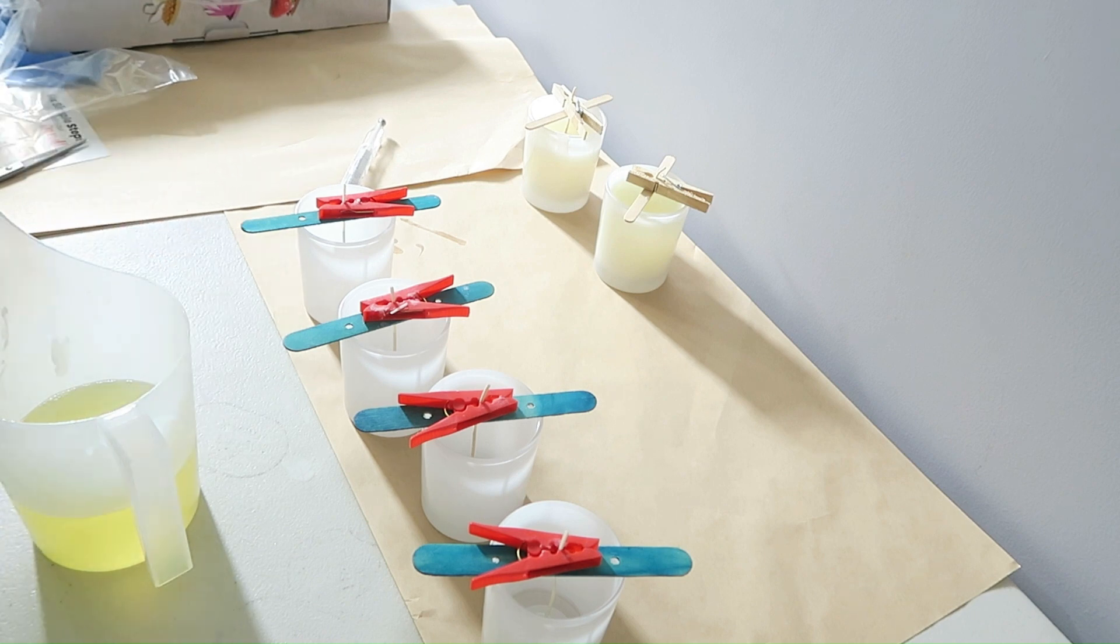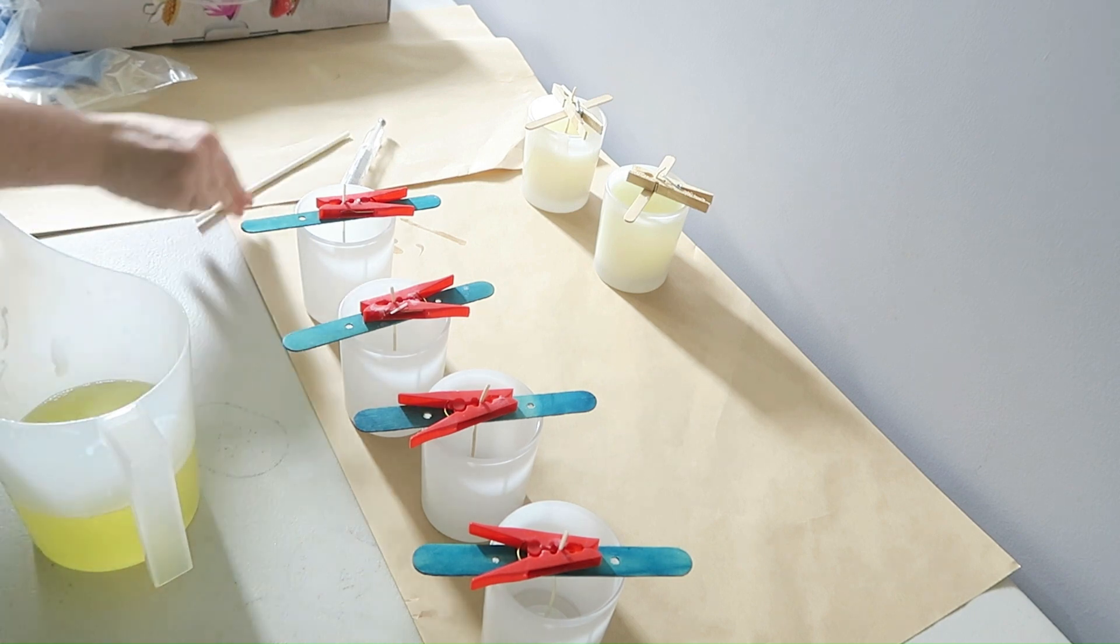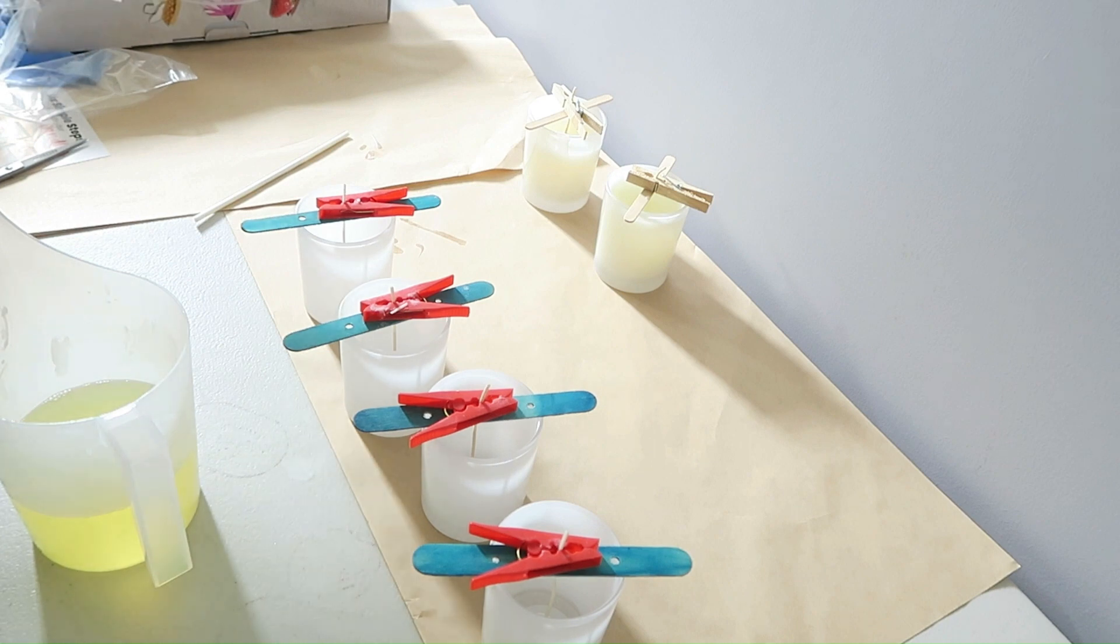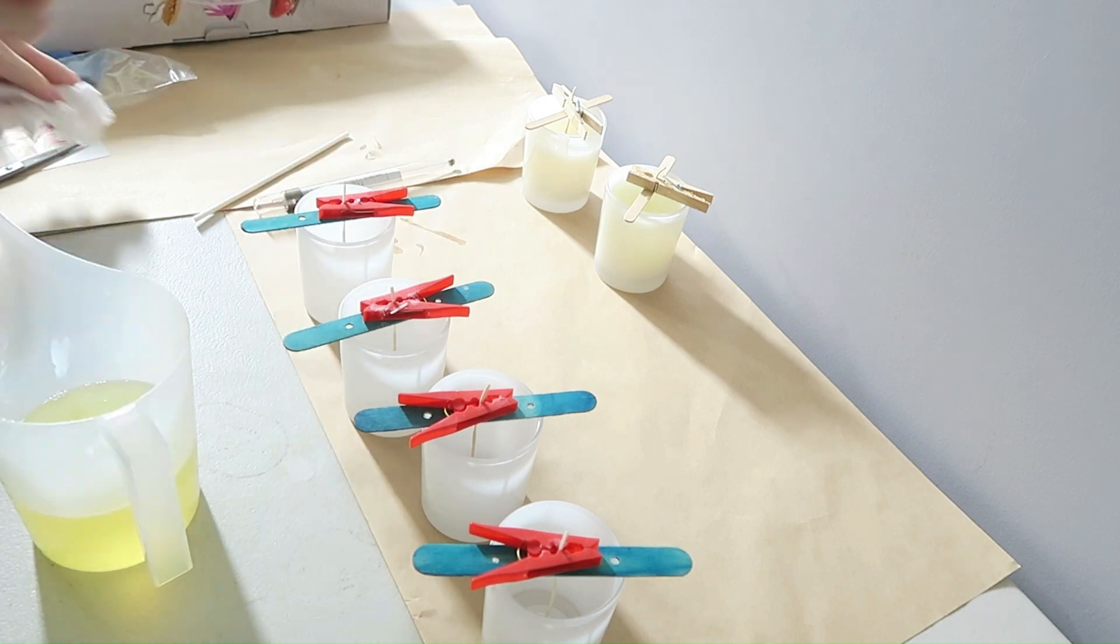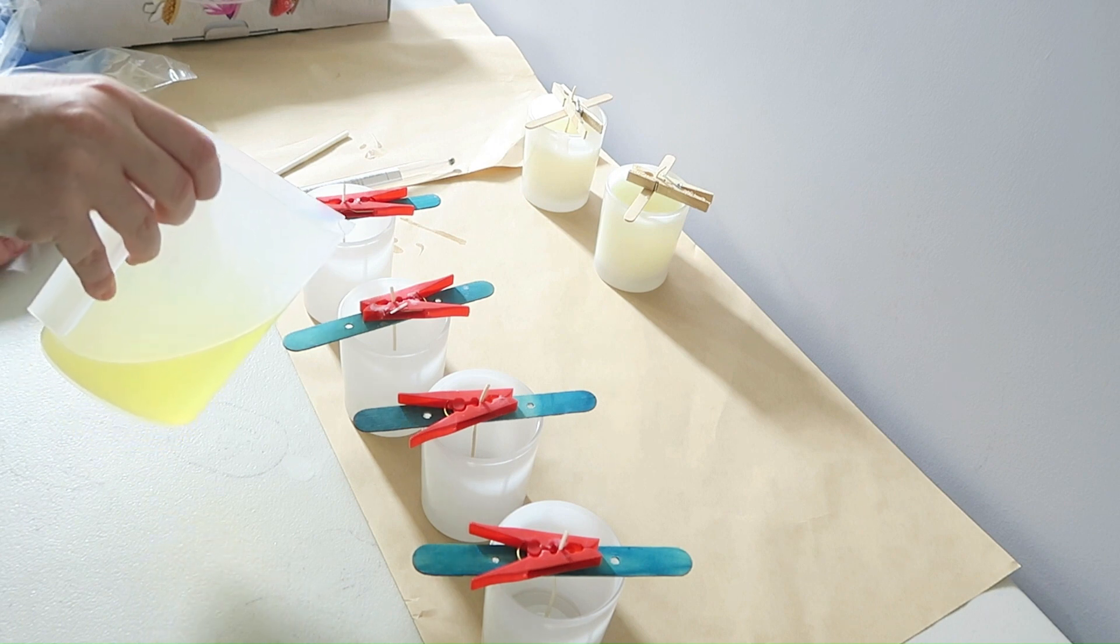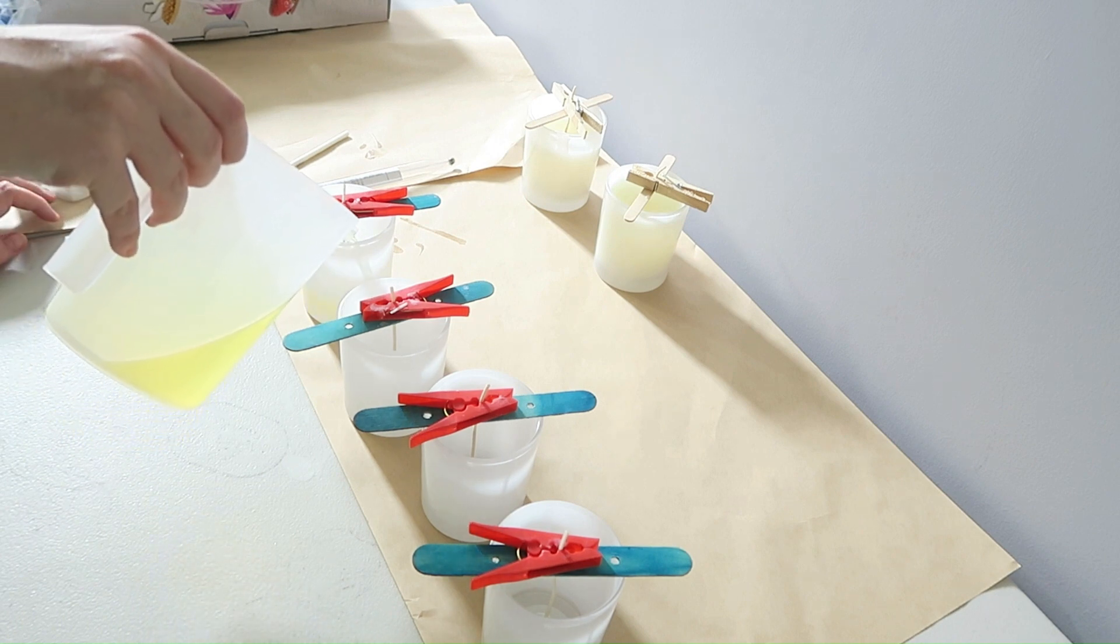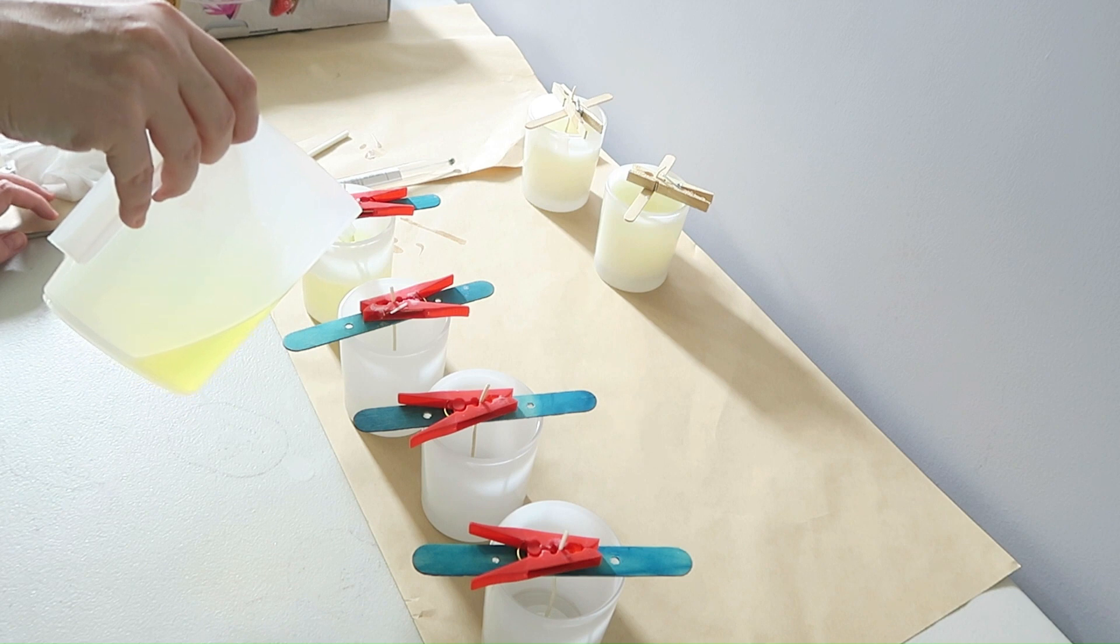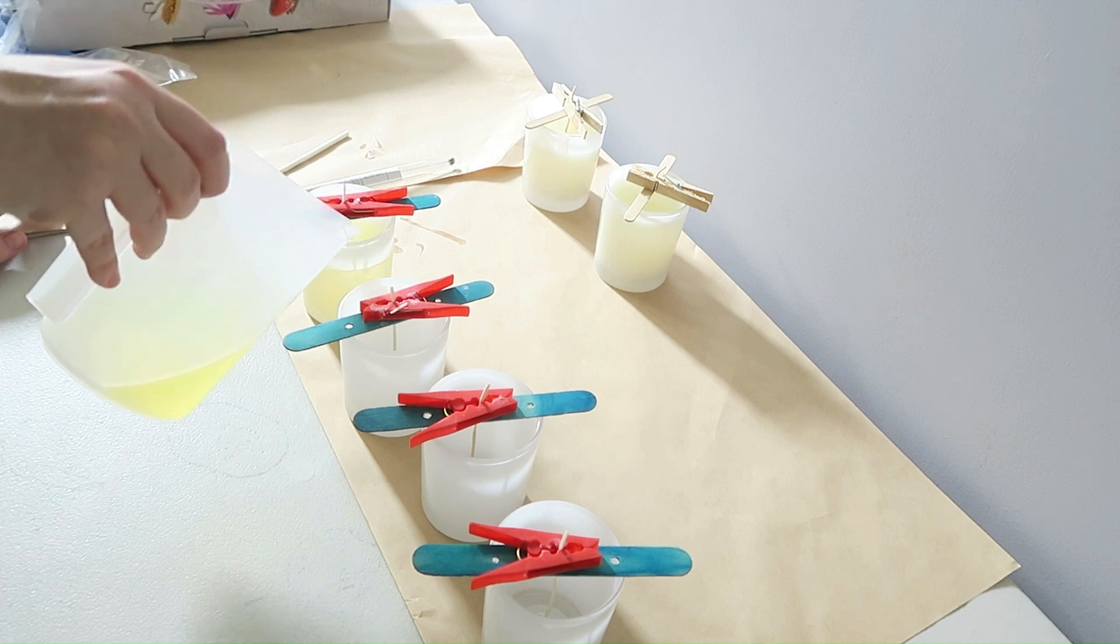You can see that I've got a few bubbles on the side of the pouring jug. Normally I would give the jug a little bit of a tap on the bench. A bit like a barista with the fluffed up steamed milk. Just to get rid of the extra air bubbles.